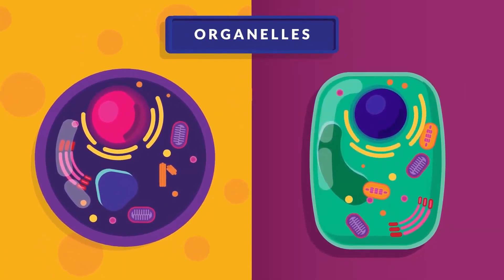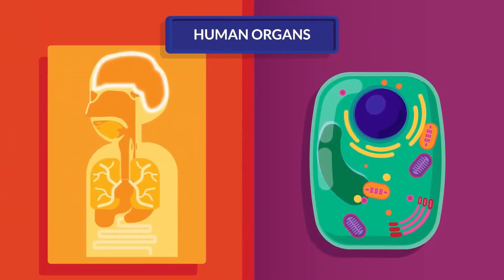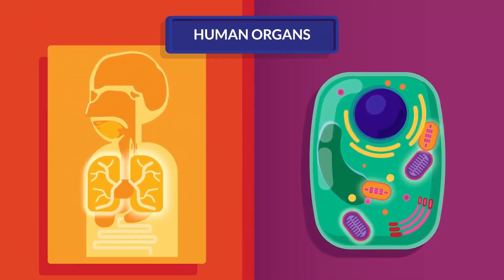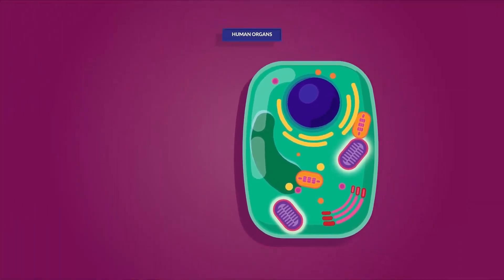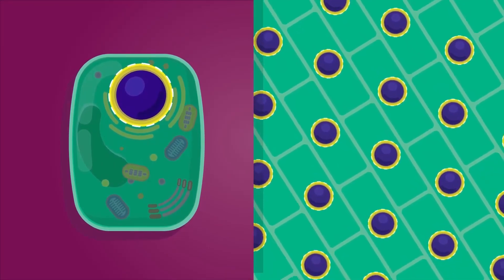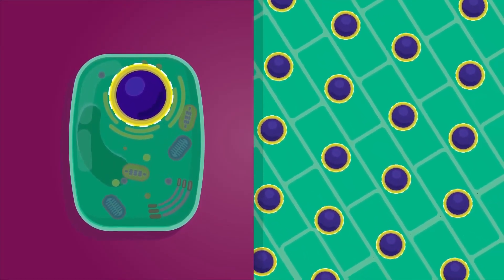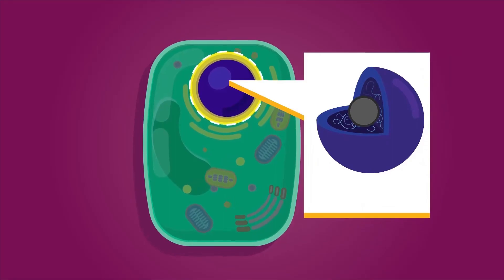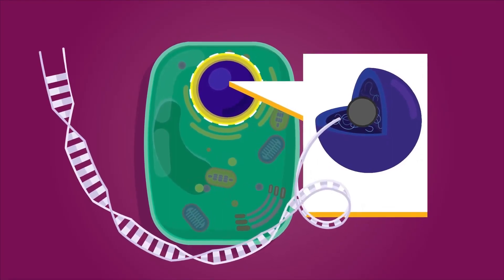They both also have organelles. Organelles are there to conduct different functions in the cell, same as our organs perform different functions throughout the body. For example, both types of cells have a nucleus which can be seen clearly under the light microscope, as it is darkly colored due to the chromatin material inside it. Chromatin is the genetic material that is made up of loosely coiled threads of DNA.